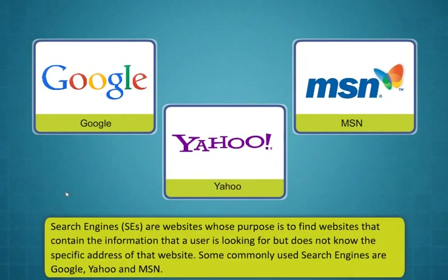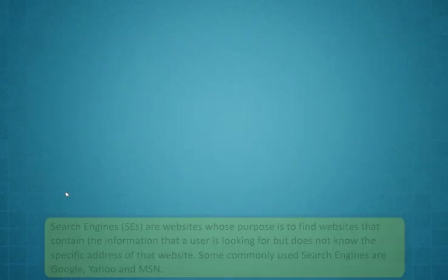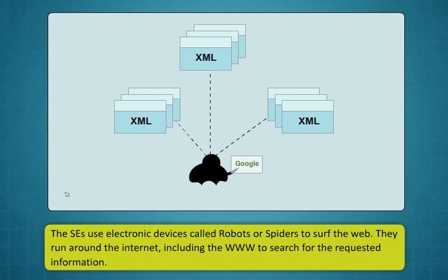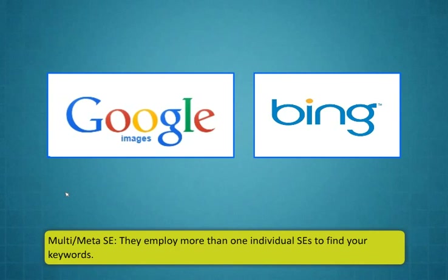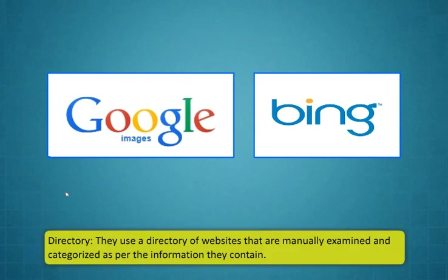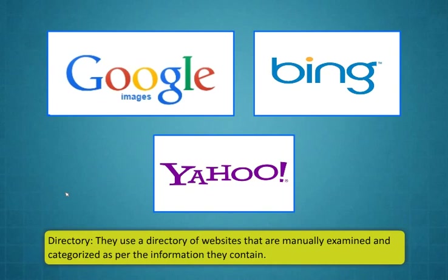Search engines are websites whose purpose is to find websites that contain the information that a user is looking for but does not know the specific address of that website. Some commonly used search engines are Google, Yahoo and MSN. Google is the most popular search engine. Search engines use electronic devices called robots or spiders to surf the web. They run around the internet including the www to search for the requested information. Multi or meta search engines employ more than one individual search engine to find your keywords. Google and Bing are examples of this type. The directory uses a directory of websites that are manually examined and categorized as per the information they contain. Yahoo is an example of a directory search engine.